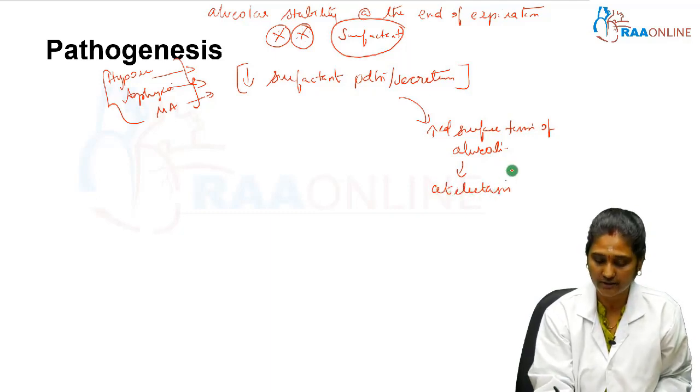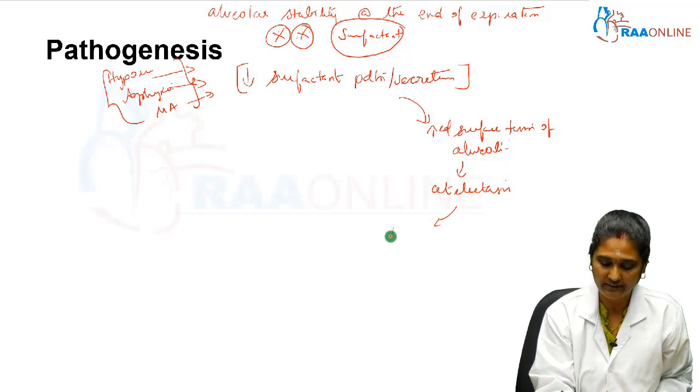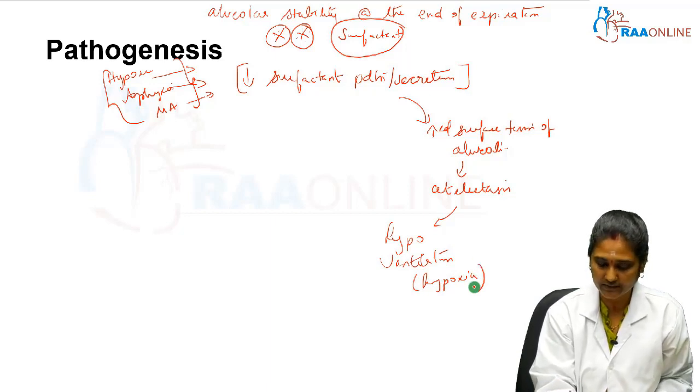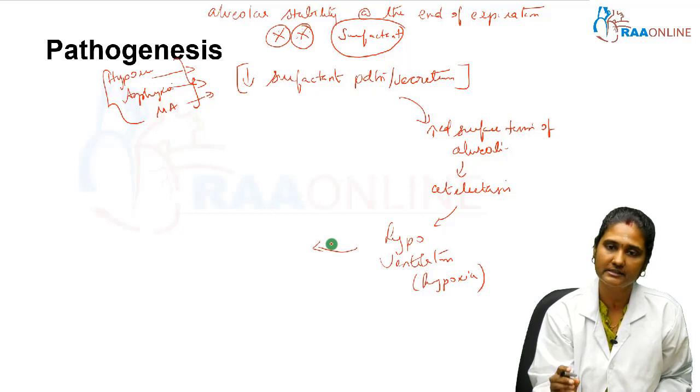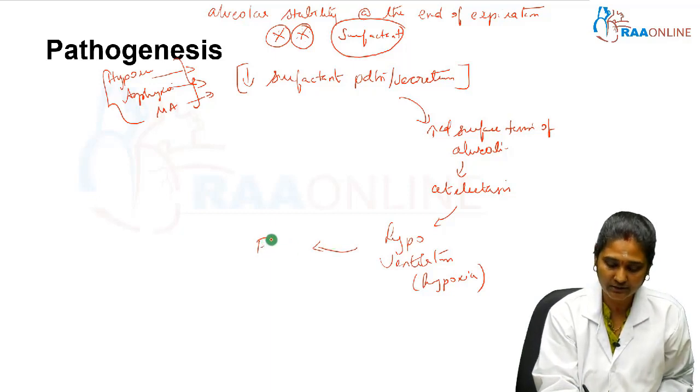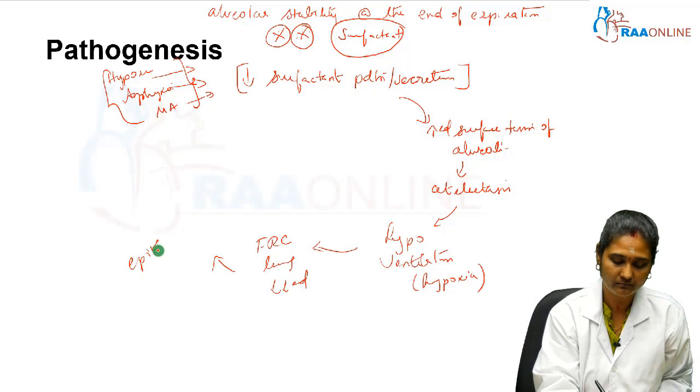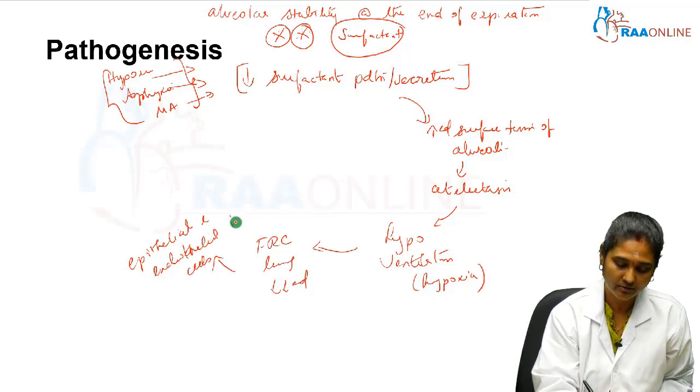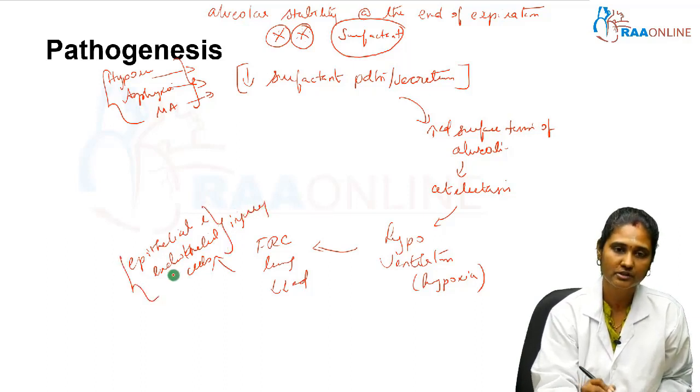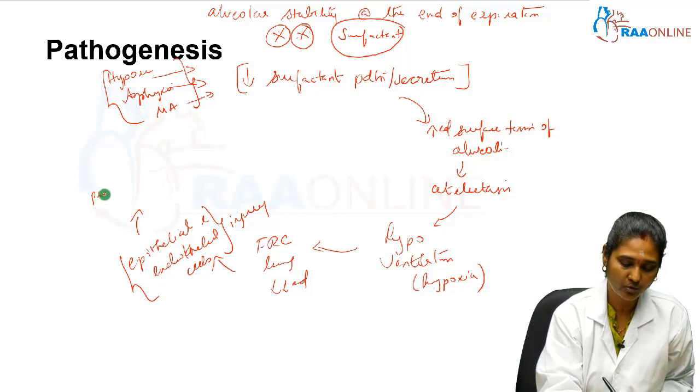This atelectasis or injury to the alveoli causes hypoventilation, which means hypoxia. There is no proper oxygen concentration. It results in hypoventilation. When this atelectasis continuously occurs, then the functional residual capacity of the lungs is decreased. This causes greater damage to the epithelial and endothelial cells of the lung, causing maximum injury.